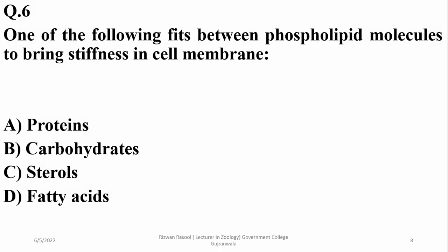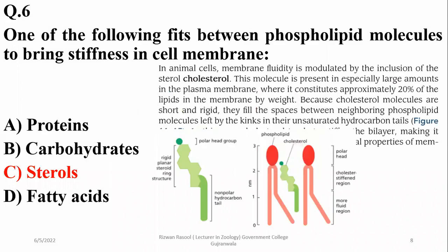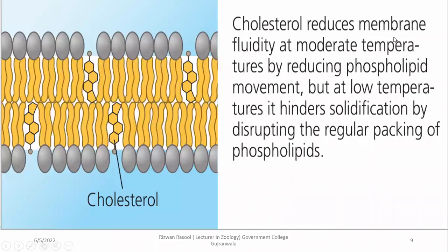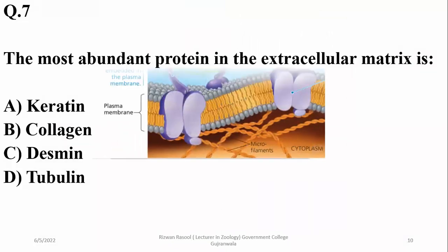Question 6: One of the following fits between phospholipid molecules to bring stiffness in the cell membrane. Cholesterol is a sterol molecule that regulates membrane fluidity in two ways: at moderate temperatures it reduces membrane fluidity by reducing phospholipid movement, adding stiffness and stability; at low temperatures it hinders solidification by disrupting regular packing of phospholipids. Right option is sterol (cholesterol).